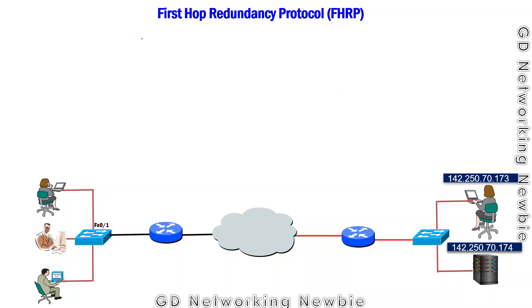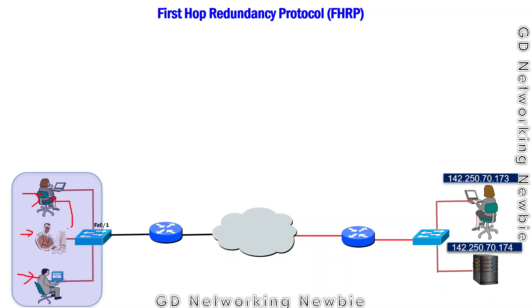Hi everyone. Today we discuss First Hop Redundancy Protocol. To understand the idea, let's consider this network. We have some users on the left-hand side — these users are all within the same subnet. If some users want to send information to another user on the same subnet, they can make use of this switch.